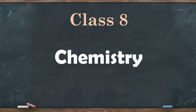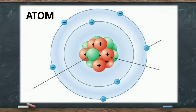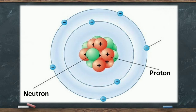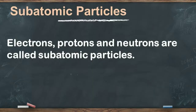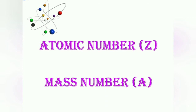Hello everyone. In this Class 8 chemistry video lesson, today we are going to study about atomic number, mass number, atomic mass, isotopes, and isobars. From Bohr's atomic model, it is clear that in the center of an atom there is a nucleus in which protons and neutrons are present, and electrons revolve around this nucleus in circular paths called energy shells or orbitals. The electrons, protons, and neutrons are called subatomic particles. The protons and neutrons found in the nucleus are called nucleons.